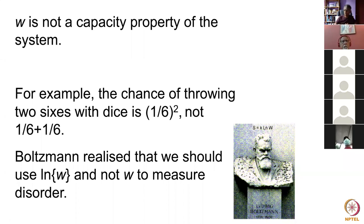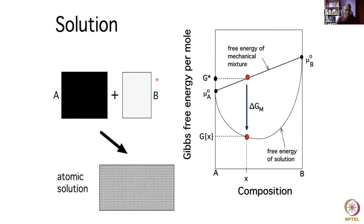I want to create a solution — I've got large chunks of material and I want to create a solution by mixing up the atoms. Here's a large chunk of A and a large chunk of B in proportions 1 minus x and x respectively, and somehow we make them form an atomic solution, an intimate mixture of A and B atoms. The free energy of this mechanical mixture is given by the weighted sum: G* equals μ°_A times (1 minus x) plus μ°_B times x — simply along the straight line joining the pure elements.